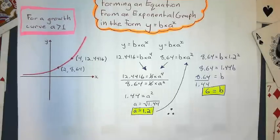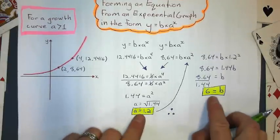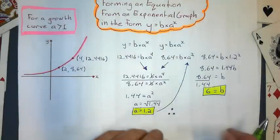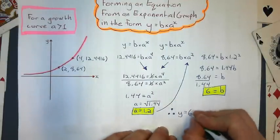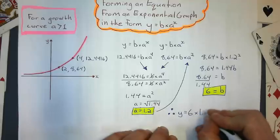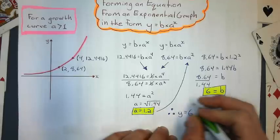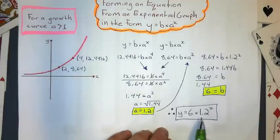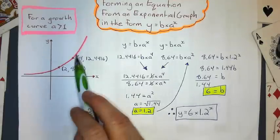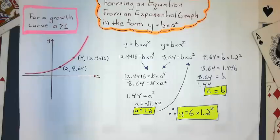So what I do now is substitute these numbers back into the general form of the equation. And once I have the equation, I can find out any x or y value along the curve. Now let's try a decay curve.